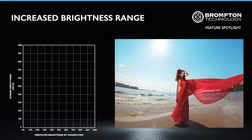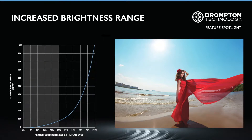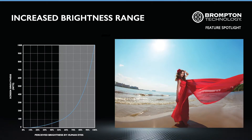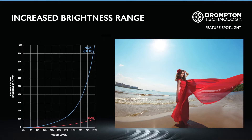Human eyes can respond to a wide range of light intensities at any one time, but they do so in a non-linear fashion. At the darker end of an image, small differences in brightness are easily perceived as visible detail. However, much greater differences in brightness are required for human eyes to perceive a change in luminosity within the brighter parts of an image. The increased brightness range of HDR allows it to distribute the luminosity of played content to look more lifelike to our eyes.